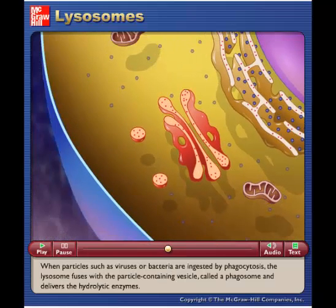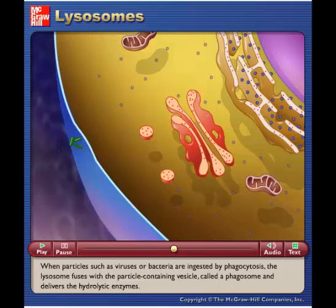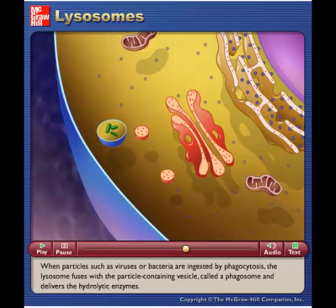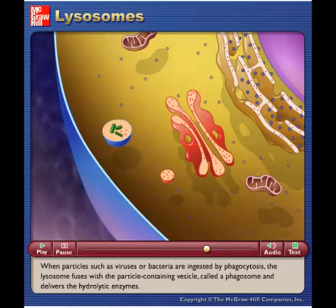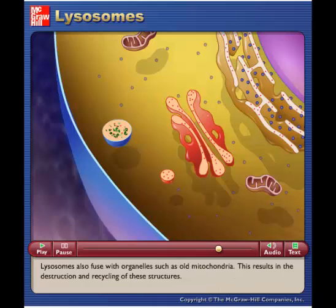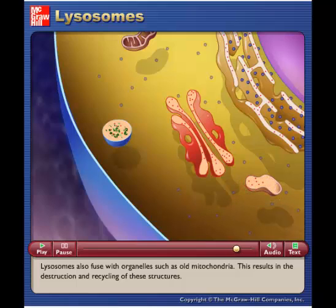When particles such as viruses or bacteria are ingested by phagocytosis, the lysosome fuses with the particle-containing vesicle, called a phagosome, and delivers the hydrolytic enzymes. Lysosomes also fuse with organelles such as old mitochondria. This results in the destruction and recycling of these structures.